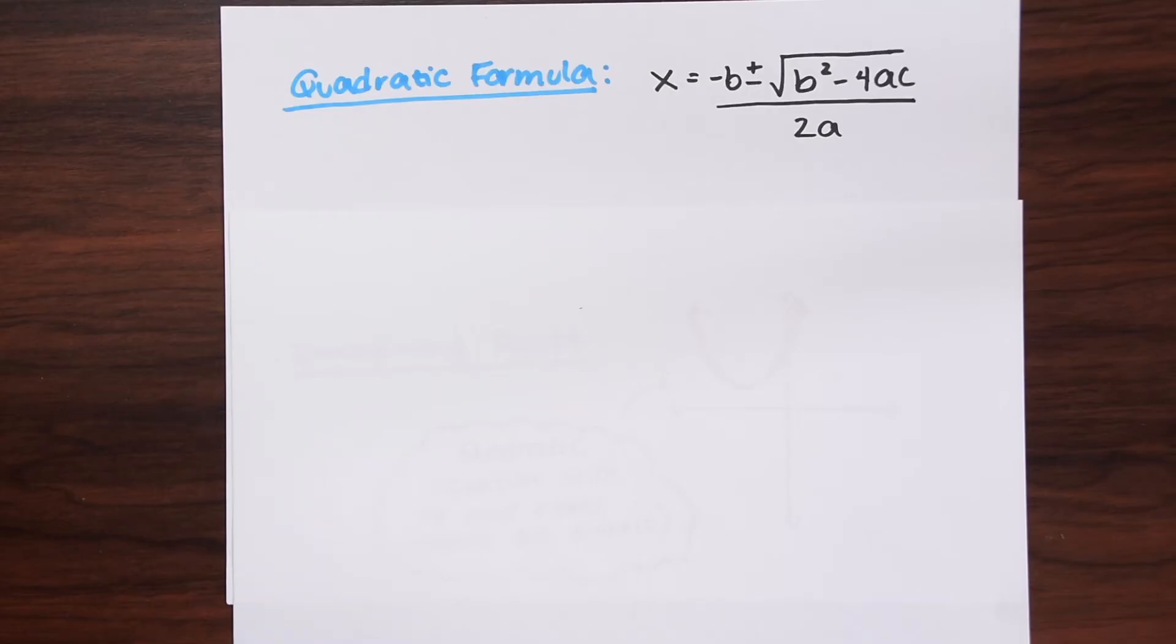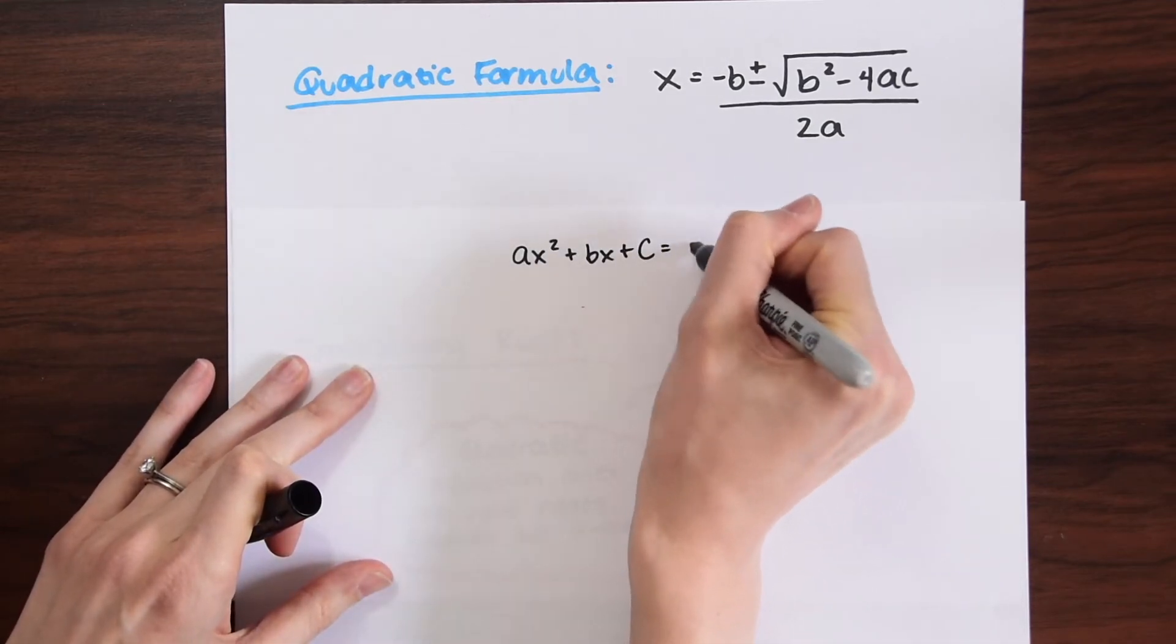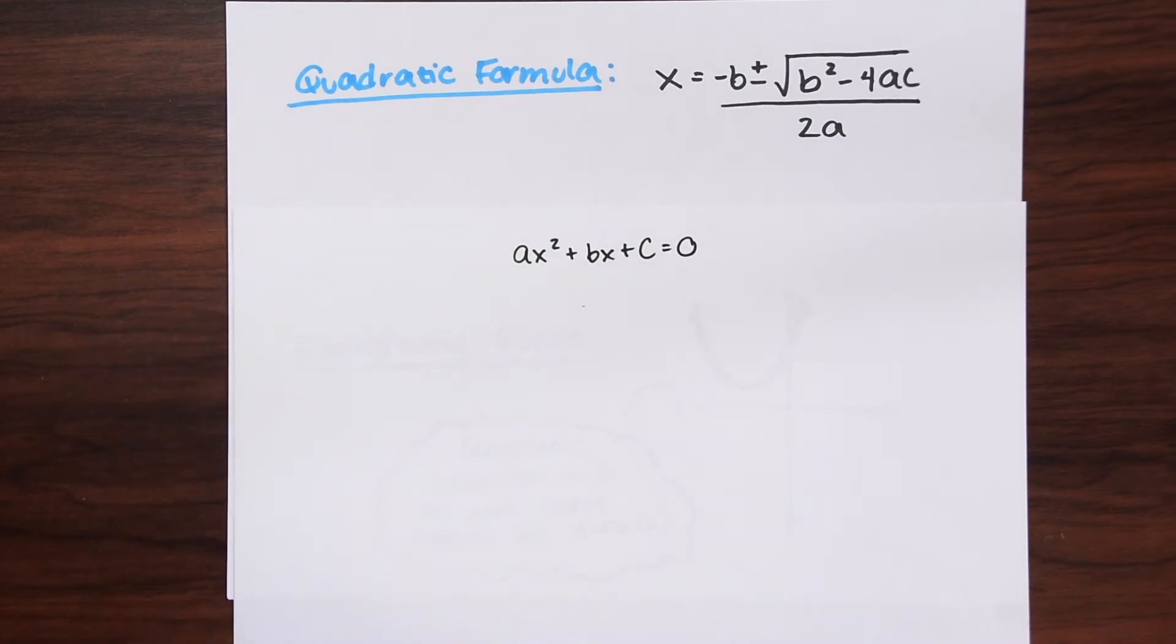So first, what is a quadratic equation? A quadratic equation always takes the standard form of ax squared plus bx plus c equals zero. At this point we should be familiar with these. If you haven't, please check out my video on this before going any further.